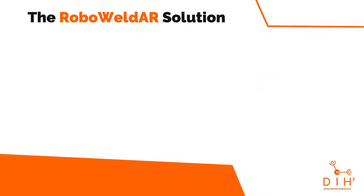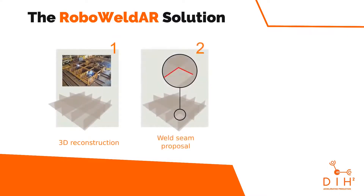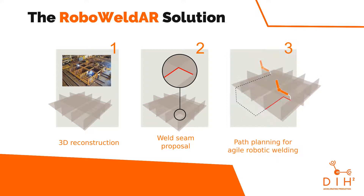First, we create a 3D model of the welding target. Then we run our weld seam proposal algorithm, which identifies potential candidate seams. Finally, the robot's path planning algorithm proceeds with following the proposed path in order to weld the part.